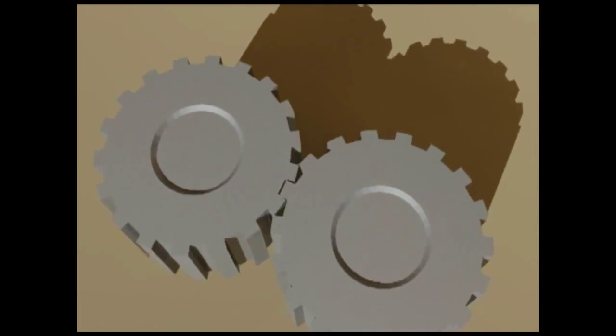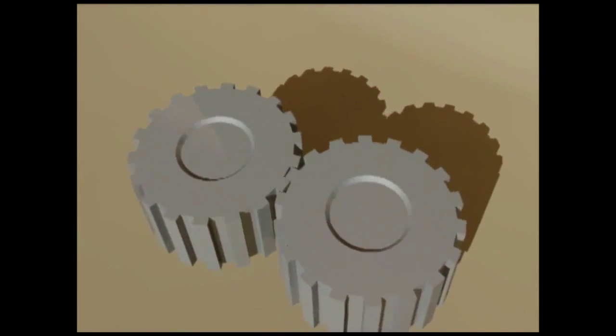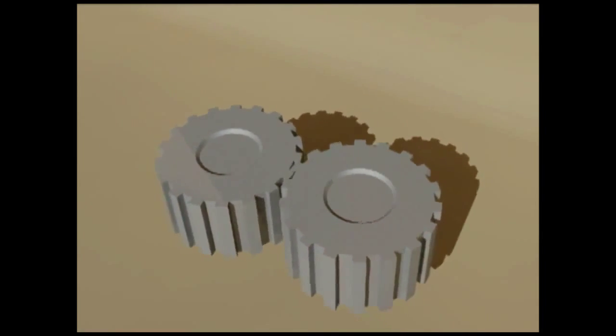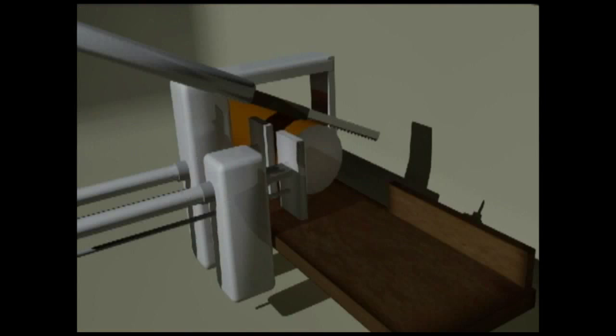This factory makes gears that go into transmissions for industrial machines. Production begins with a large round bar of high-grade steel, which contains a certain amount of carbon to make it even stronger.